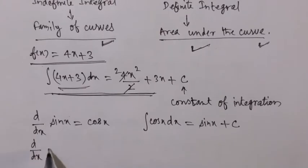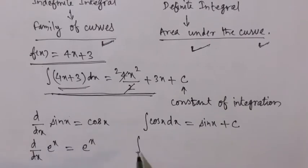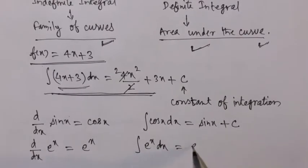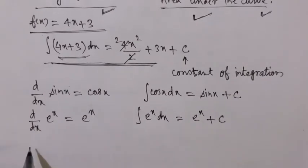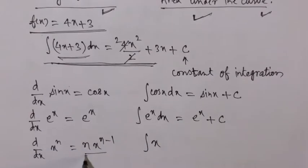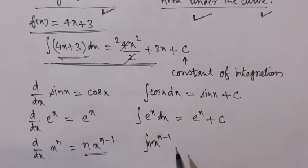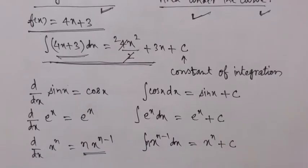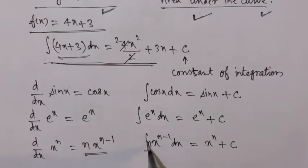If you integrate e^x dx, since the differentiation of e^x is e^x, the integration of e^x is also e^x, plus c. For the differentiation of x^n we get n·x^(n-1). So the integration of x^(n-1) is x^n plus c. Therefore the integration of x^n is x^(n+1)/(n+1) plus c.